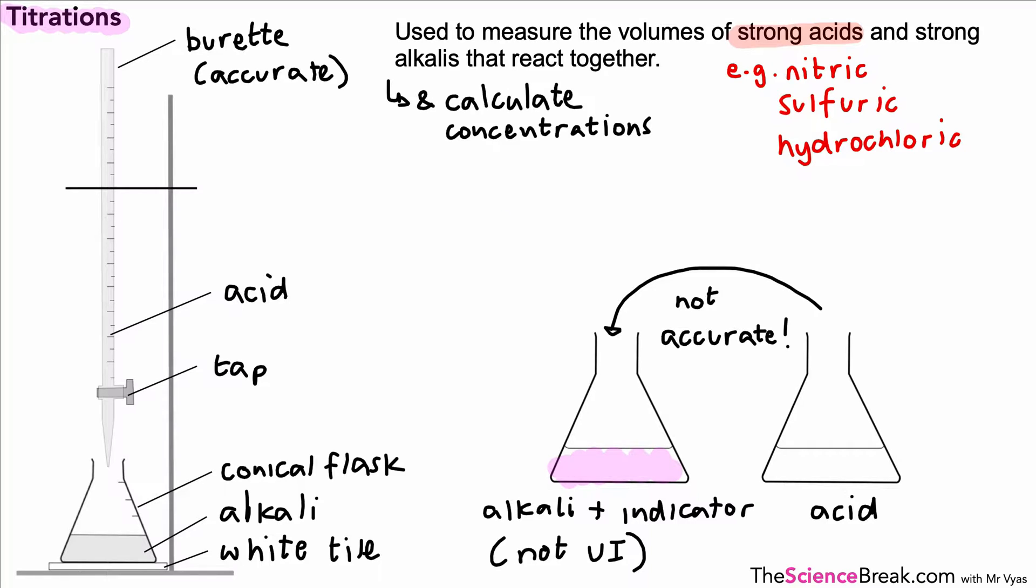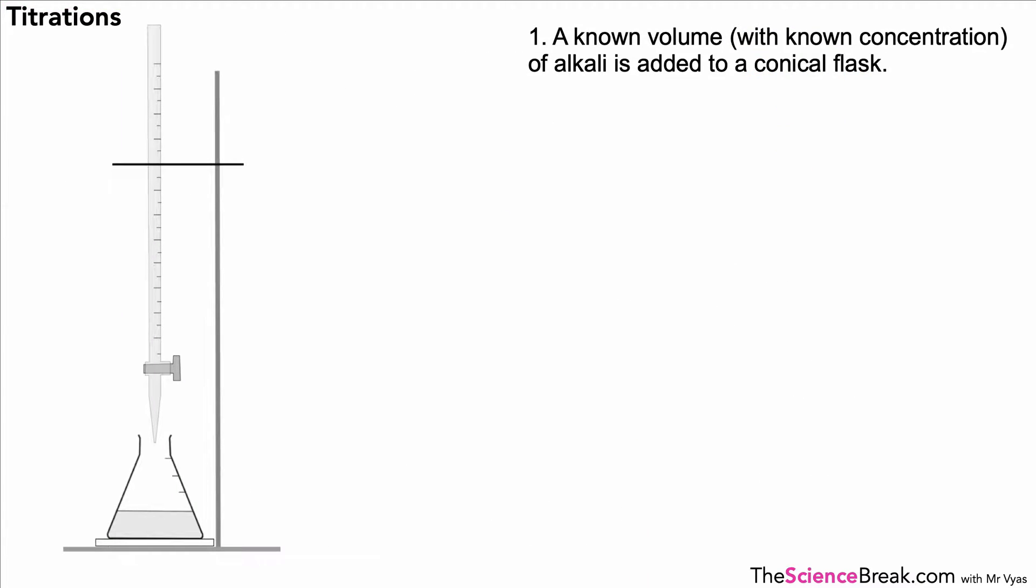So what are the steps? In step one, for this example, we have a known volume with a known concentration of alkali that is added to our conical flask. When we talk about a known volume, we have to be very accurate.